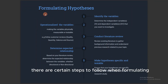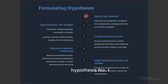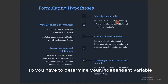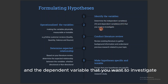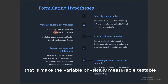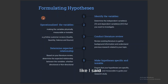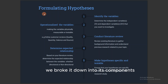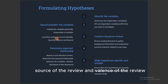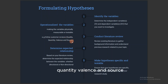There are certain steps to follow when formulating a hypothesis. Step one: identify the variables — determine your independent variable and dependent variable that you want to investigate. Step two: operationalize the variables, that is, make the variables physically measurable and testable. For example, 'online customer reviews' can be broken down into its components: quality of the review, quantity of the review, source of the review, and balance of the review.